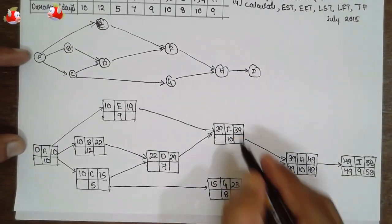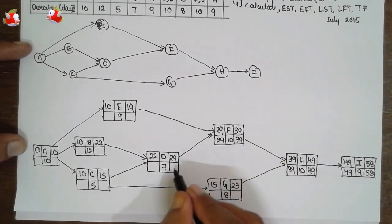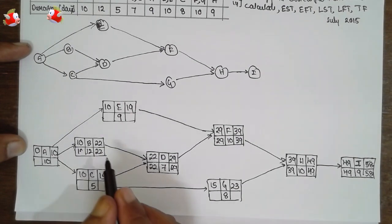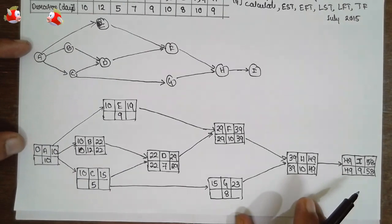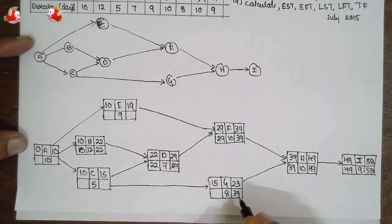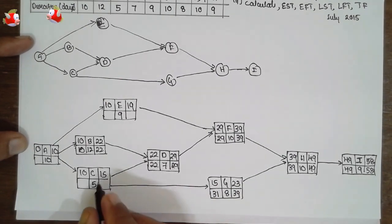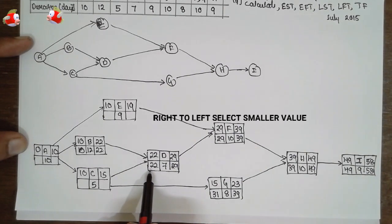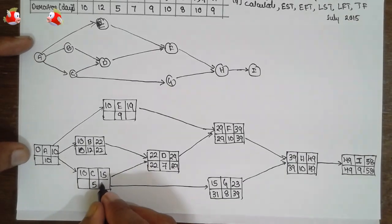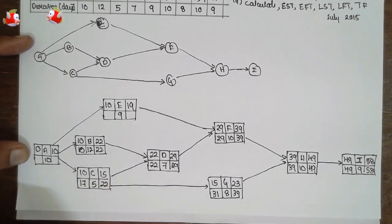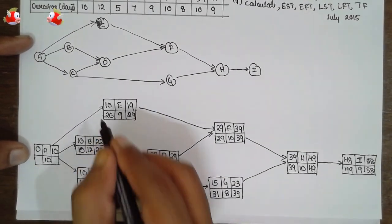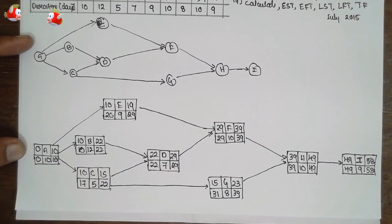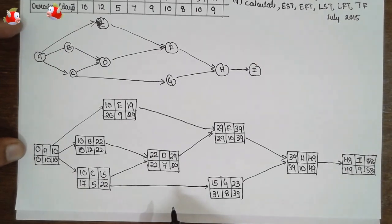Now move the 58 here. 58 minus 9, 49. Move 49 here. 49 minus 10, 39. First I will complete the critical part. See the 39, 39. Write 39 here. 39 minus 10, 29. Move 29 here. 29 minus 7, 22. Move 22 here. Now wait here. This is a junction here. As we move from left to right, we have to select the smallest one. 22 is the smallest. Therefore you have to consider 22 here. 22 minus 5, 17.